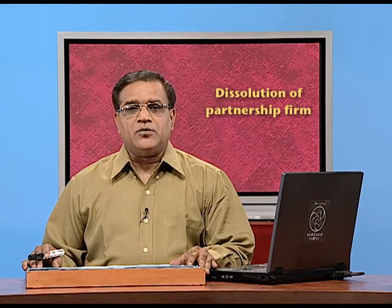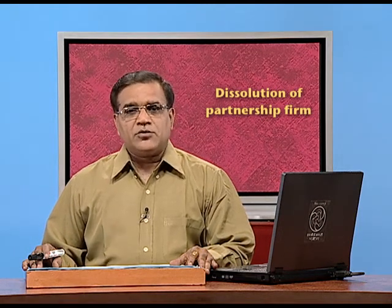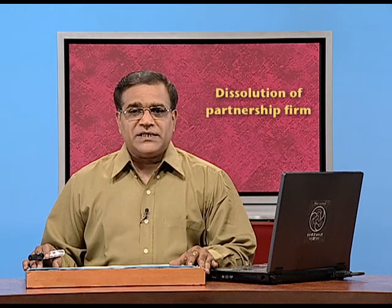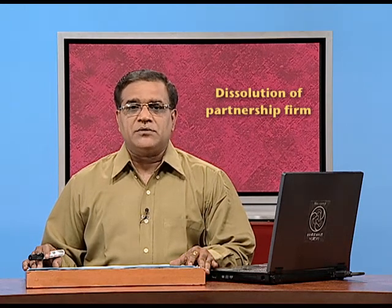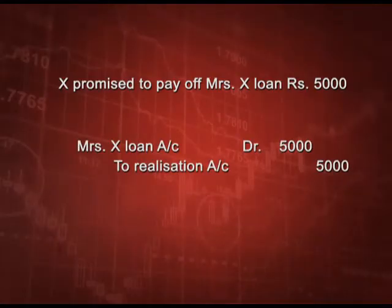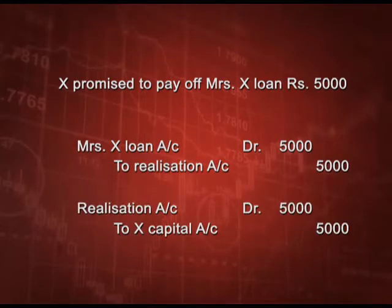The next entry: X promised to pay off Mrs. X's loan of 5000. Now, Mrs. X's loan is an outsider liability — it is not treated so if X is a partner, then Mrs. X will also be treated as a partner. So Mrs. X loan will first be transferred to realization account on the credit side by the entry: Mrs. X Loan Account debit to Realization. When Mr. X agrees to pay it, the entry will be Realization Account debit to X Capital Account, because he has agreed to pay it — so no cash is paid; it will be in X's capital account.